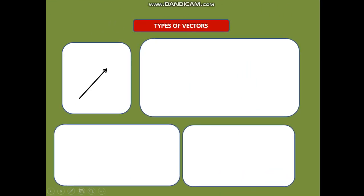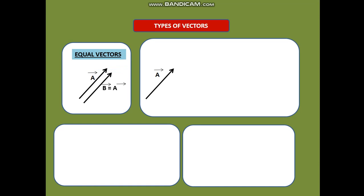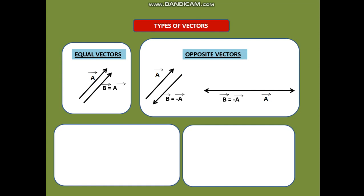Types of vectors. Let us take vectors A and B. If they have both the same magnitude and direction, they are known as equal vectors. If vector A and vector B are in opposite directions but have the same magnitude, such vectors are known as opposite vectors.